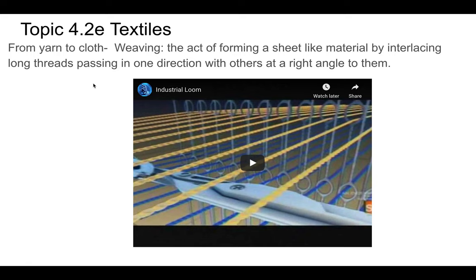Another way to get cloth is weaving — the act of making a sheet of material by interlocking long threads passing from one direction to the other at right angles. This is something very ancient, but now we use industrial looms. The video shows a good example of how weaving occurs.